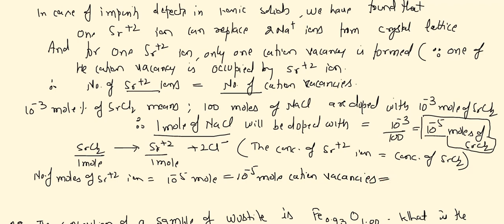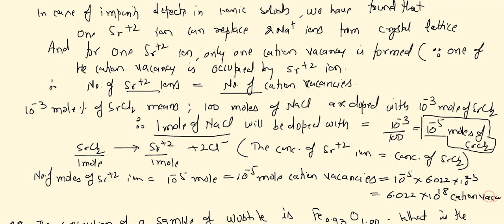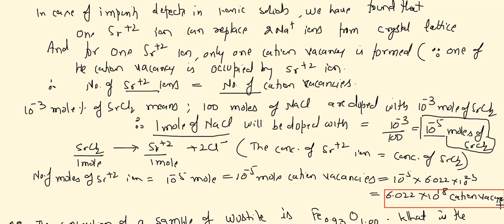Converting cation vacancies from moles to actual number by multiplying by Avogadro's number: 10⁻⁵ × 6.022 × 10²³ = 6.022 × 10¹⁸ cation vacancies. This is the number of cation vacancies formed when NaCl is doped with 10⁻³ mol percent SrCl₂.